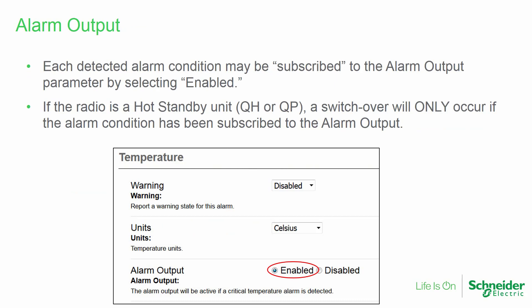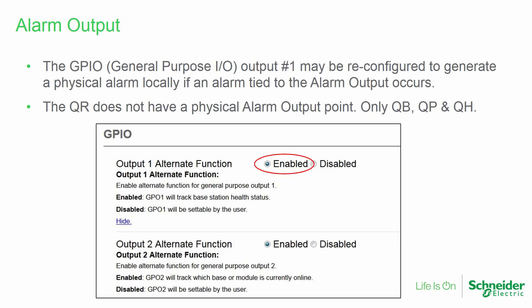Each detected alarm condition may be subscribed to the alarm output parameter by selecting the Enabled button on the alarm's setup page. If the radio is a hot standby unit, a QH or QP, a switchover will only occur if the alarm condition has been subscribed to the alarm output. The General Purpose IO or GPIO digital output point number 1 may be reconfigured to generate a physical alarm locally if any alarm tied to the alarm output occurs. Note that the QR does not have a physical alarm output point — only the rack-mounted QB, QP, and QH, which each have four digital outputs, have this feature.